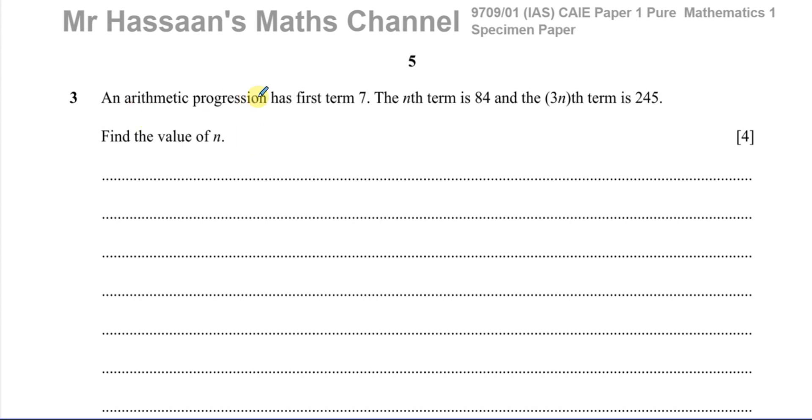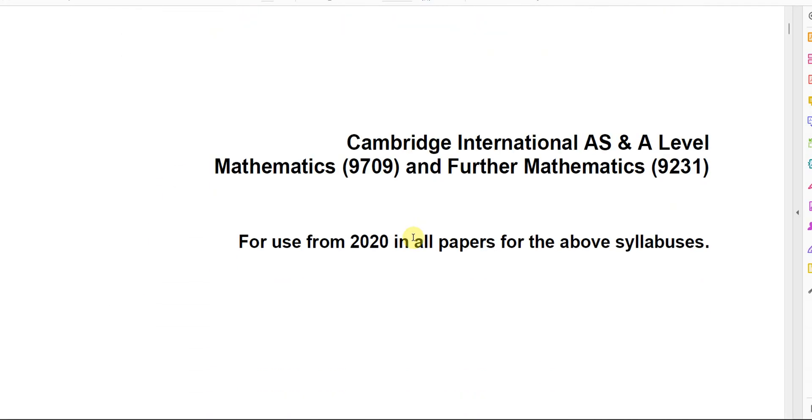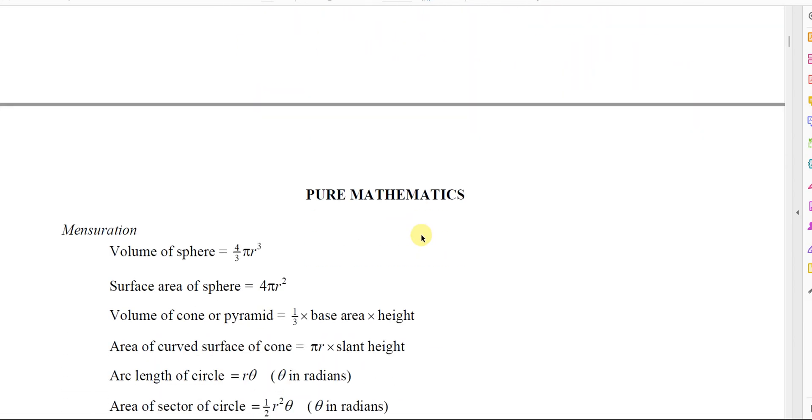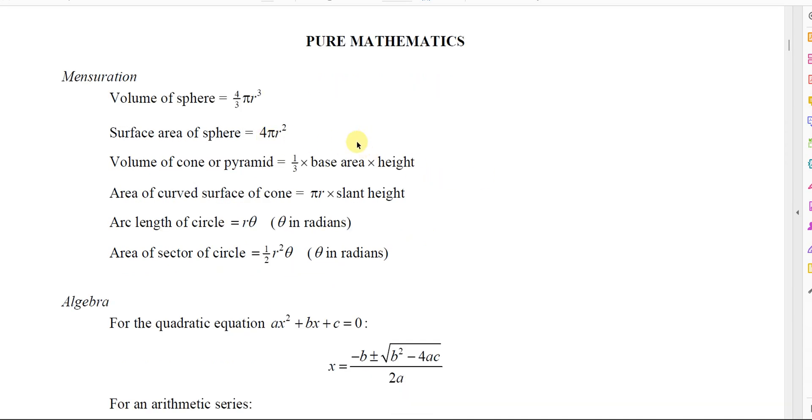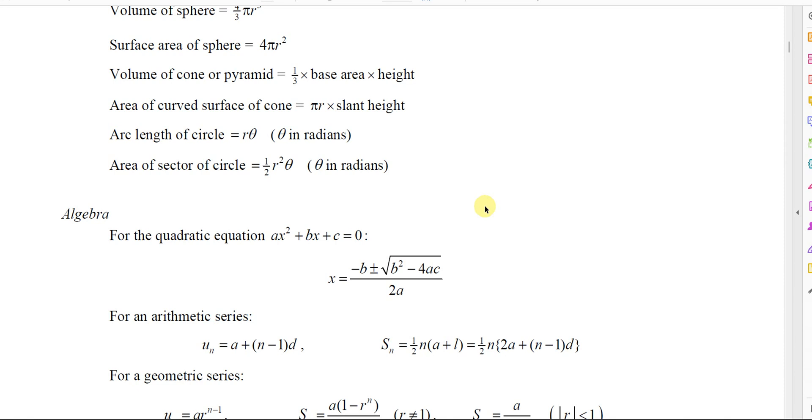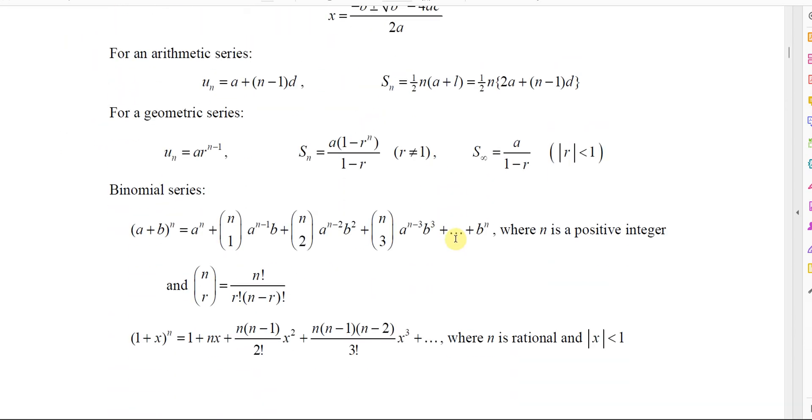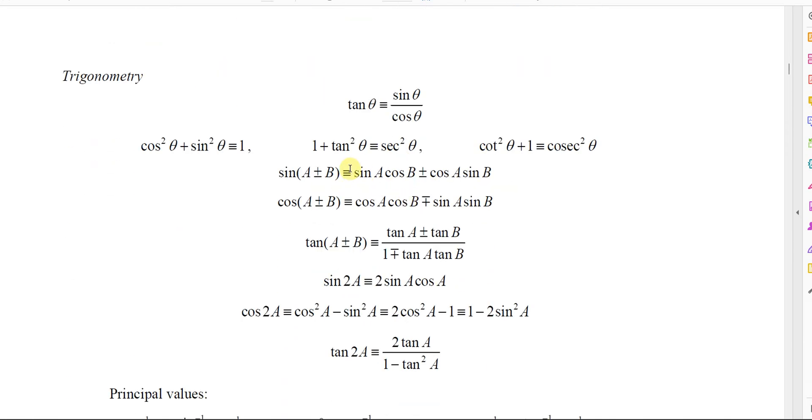With the Cambridge syllabus or the Cambridge exam comes a formula sheet which looks like this. There's a lot more actually in the formula sheet for Cambridge than there is in the Edexcel exam. They give you a lot more information. For example, the quadratic formula, and in terms of trigonometry they give you all the identities.